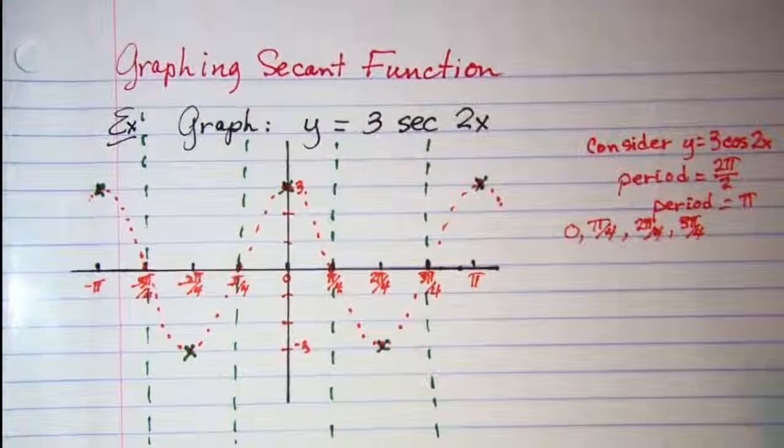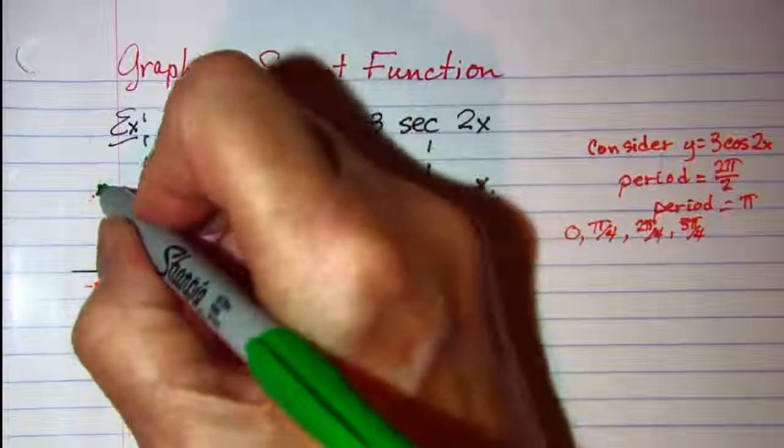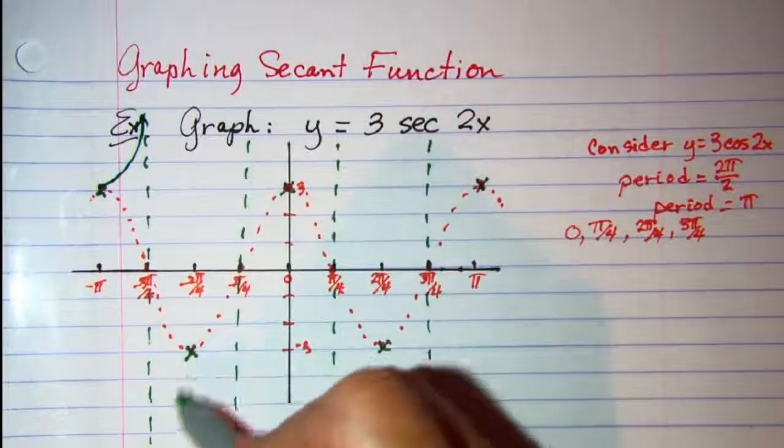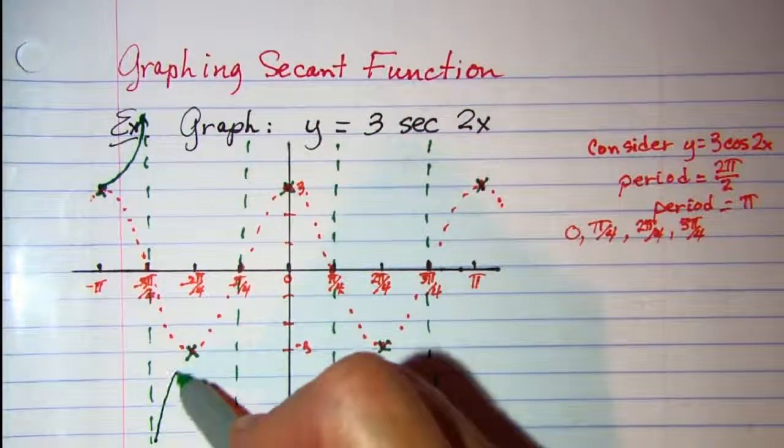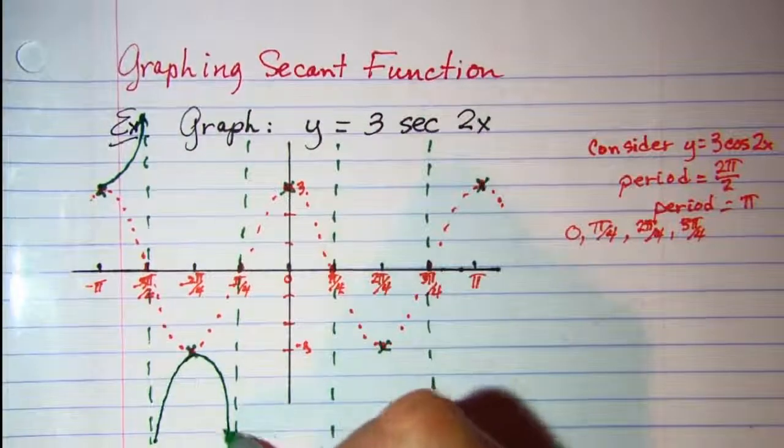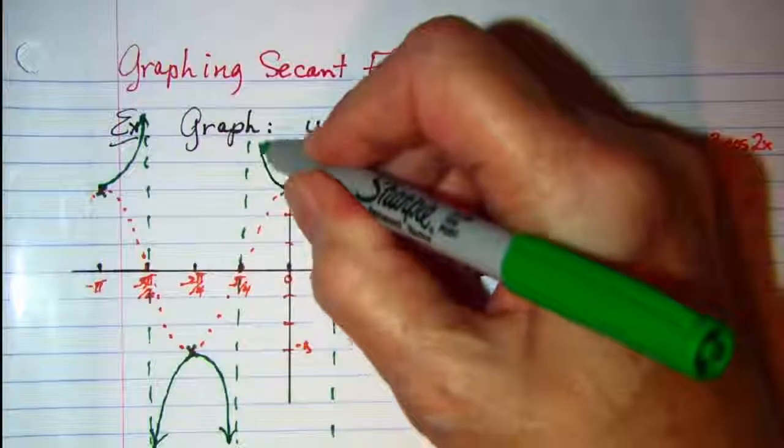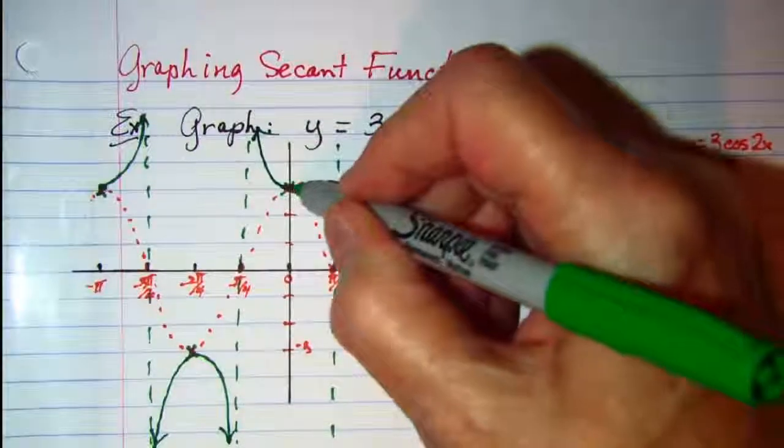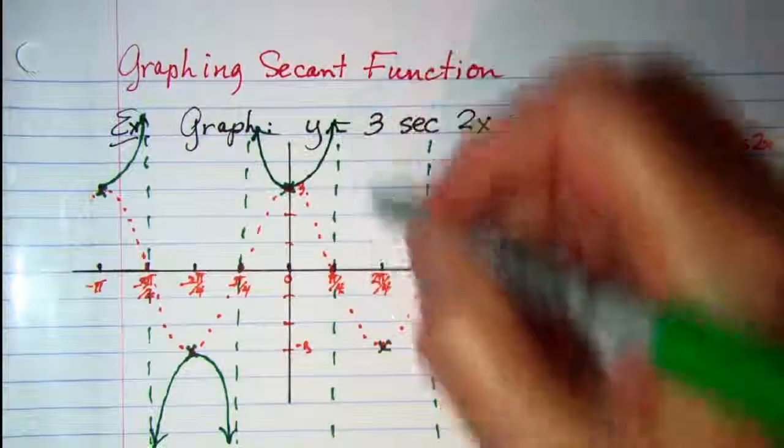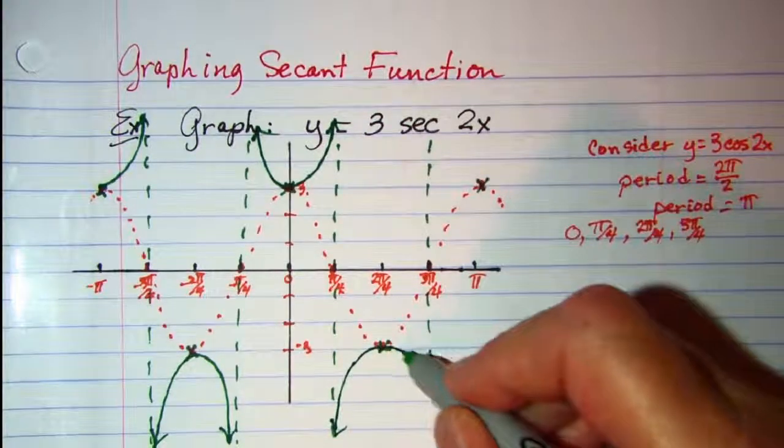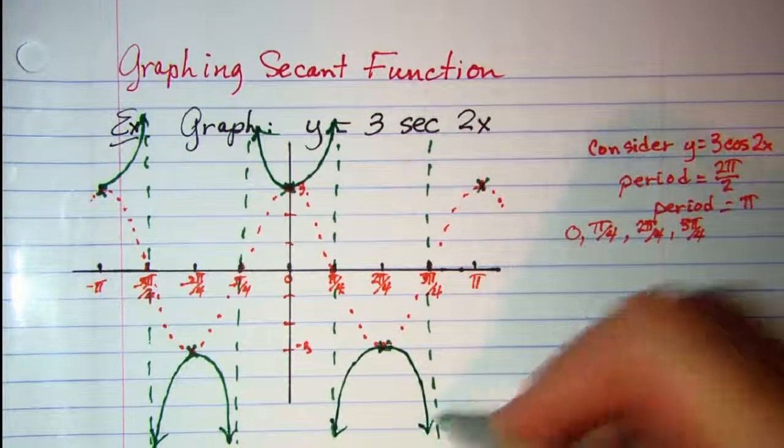So for this curve here it goes up and gets closer and closer to the asymptote, but never crosses.